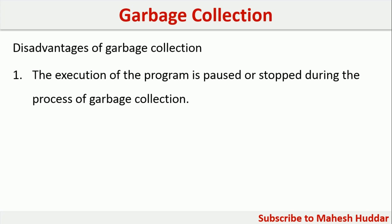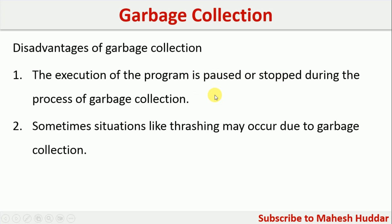The disadvantages of automatic garbage collection: whenever you try to create an object and memory is not available, automatic garbage collection will be called. Unless and until the garbage collection completes its execution, the entire program will be paused. Also, the situation of thrashing may occur. Thrashing is a situation where we remove an object from the system, but that same object may be needed in the future, so we create it again. Because memory is not available, we may remove the same object again and it may be recreated again — and the same thing may happen repeatedly.